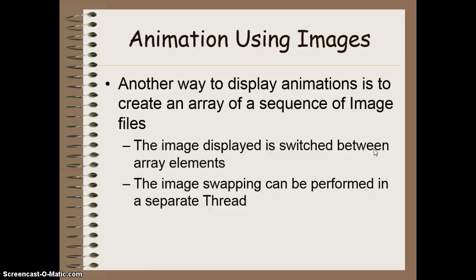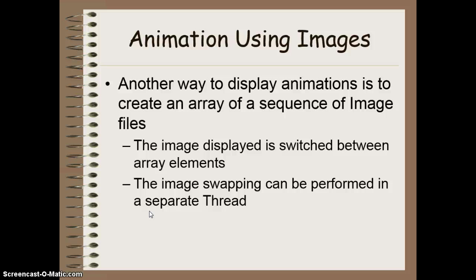One last thing we can do is animation using images. We saw before when doing animations we were redrawing pictures over and over again. We can do the same thing here — instead of drawing shapes, we can just display a bunch of similar images so it looks like an animation. You can do this by having an array of image files and then switching between which file in that array you want to display at a time. You can do that inside a thread. It's just the idea of show this image, now show the next one, and so on. You may want to put a sleep method in there just like before so you have a pause to see each individual image as it appears.